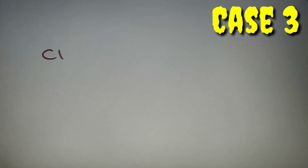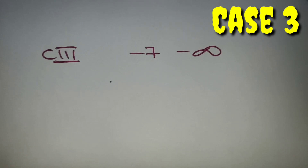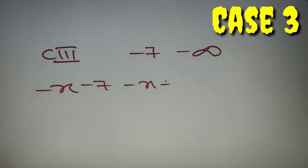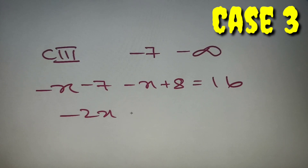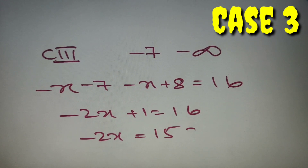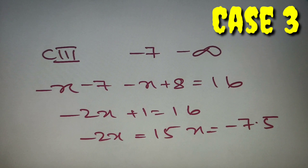For case 3, we take x from -7 to minus infinity. In this range, both moduli are negative. So we get -(x + 7) - (x - 8) = 16, which gives -x - 7 - x + 8 = 16, so -2x + 1 = 16, meaning -2x = 15, and x = -7.5.